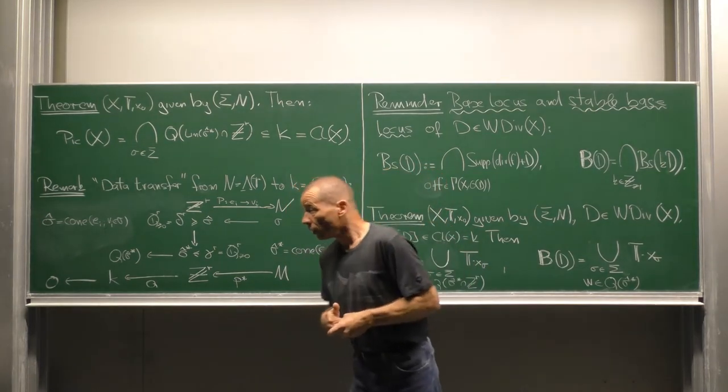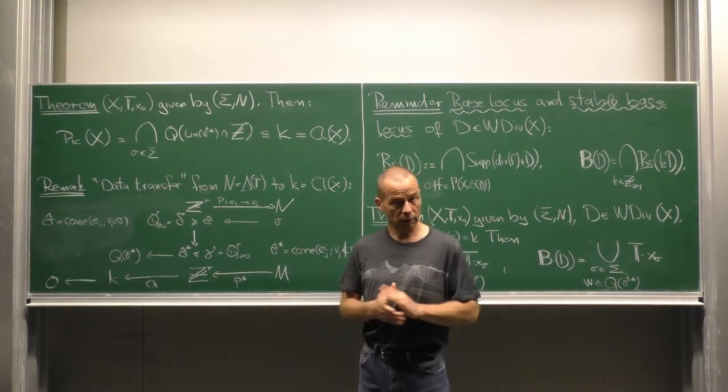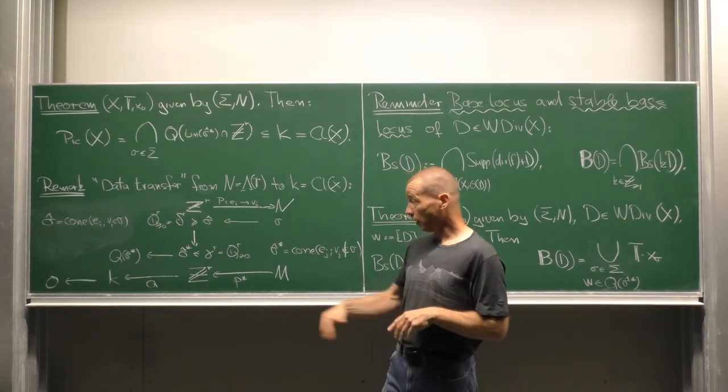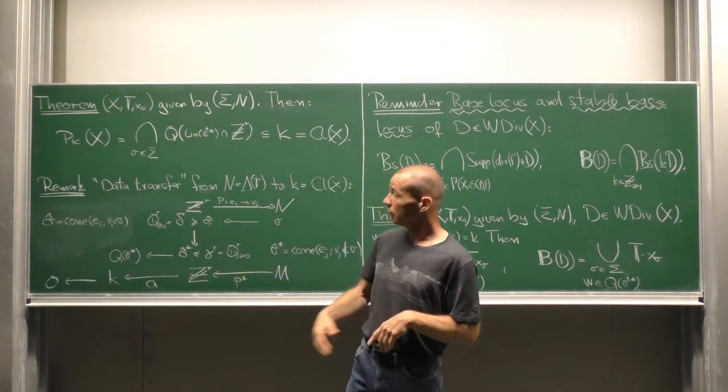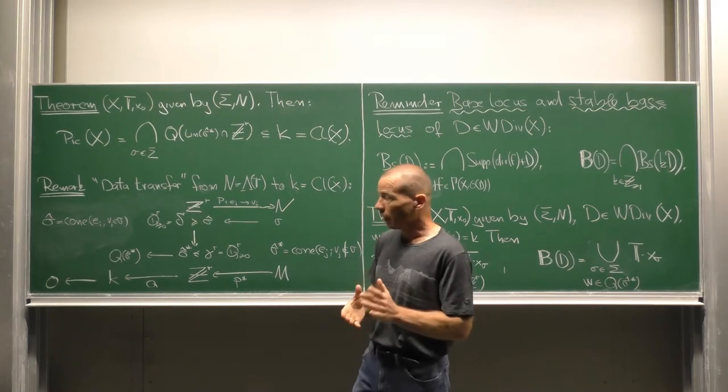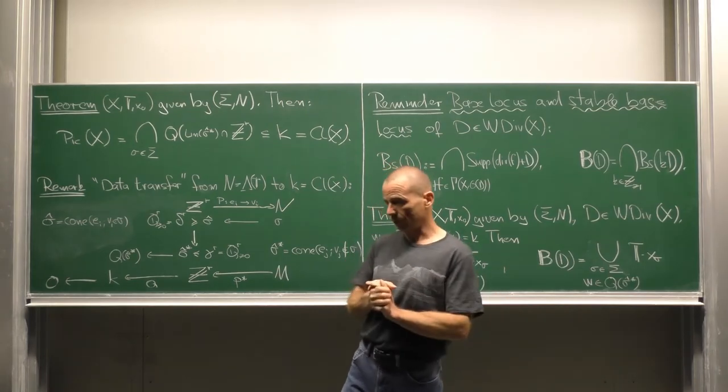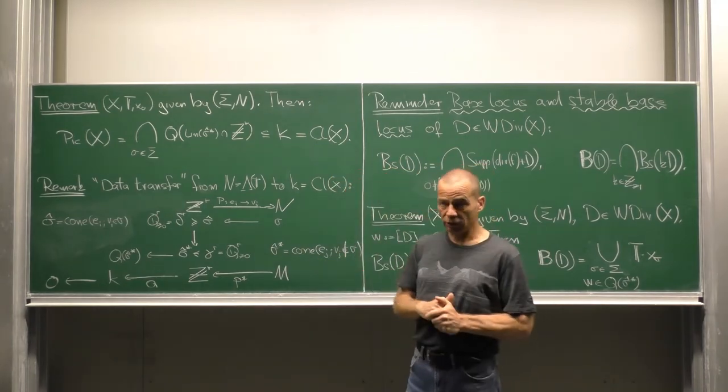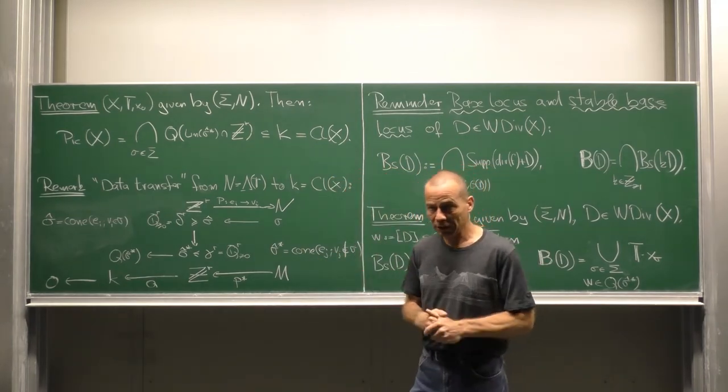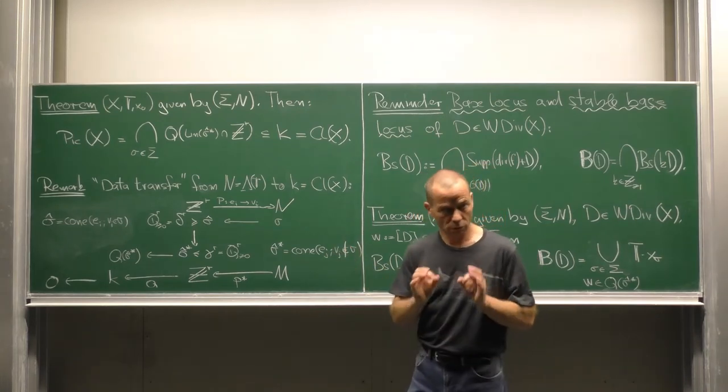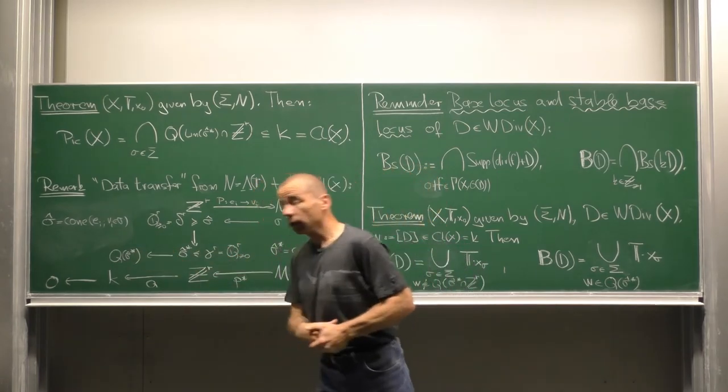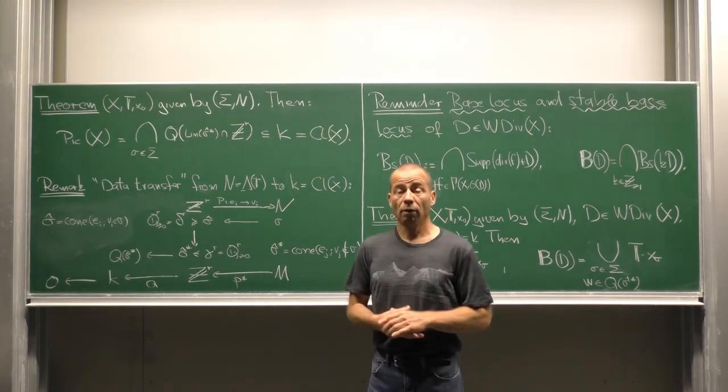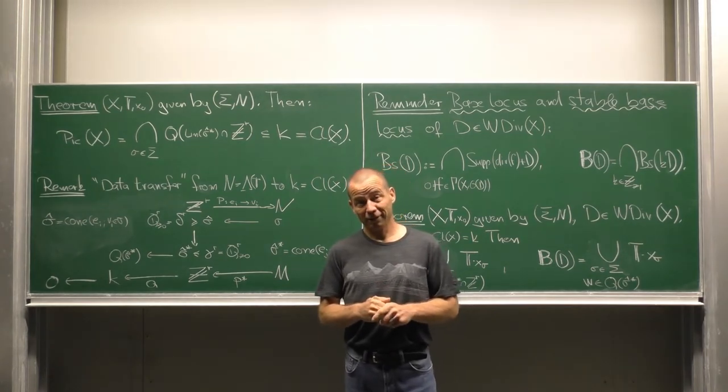Now if you want to send information connected with a cone sigma N to k the following way turned out to be quite useful. Pass to the cone sigma hat which is generated by all canonical basis vectors e i such that the primitive generator v i is contained inside. Then we pass to sigma hat star. It is a complementary face of the orthant. It is generated by all e j such that v j does not belong to sigma. And then we send sigma hat star via q to k. We will see this principle again in other situations.